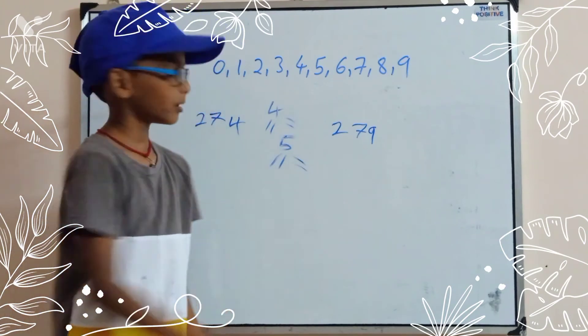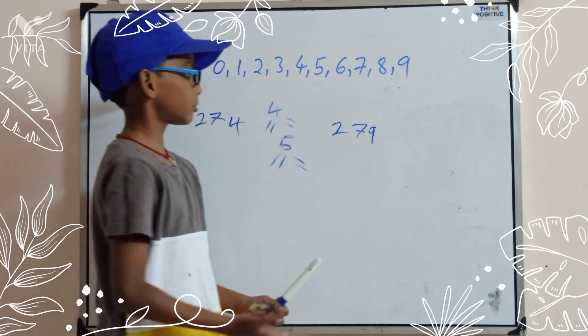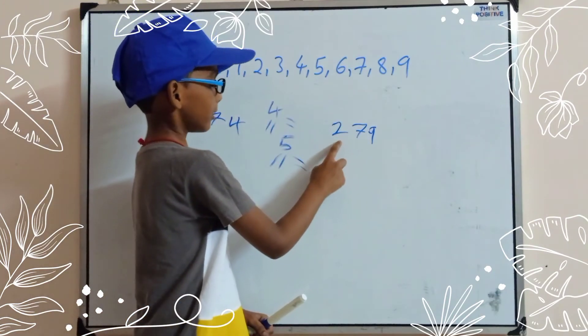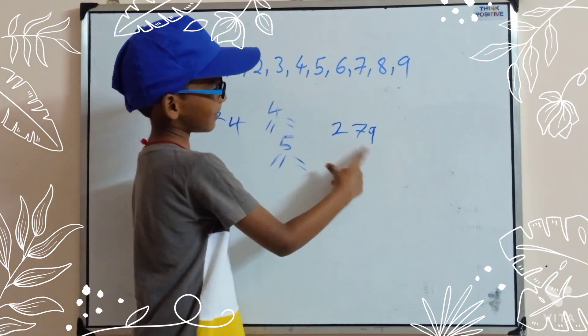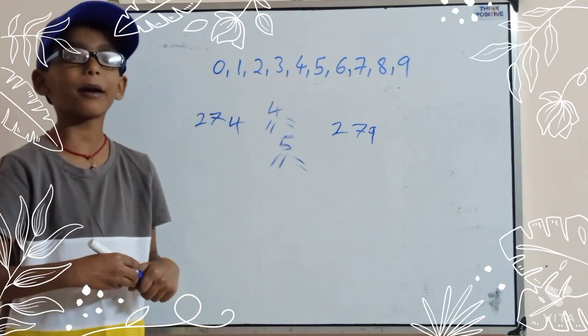9 is in 1's place. Odd. So that's why 279 is odd number.